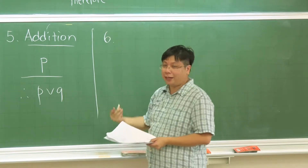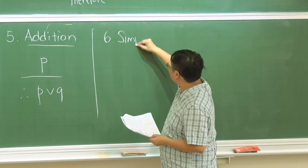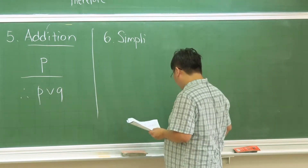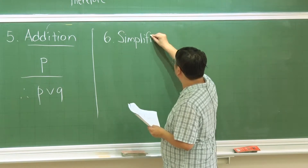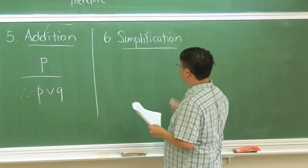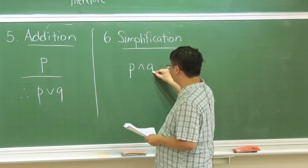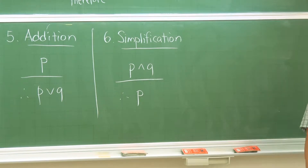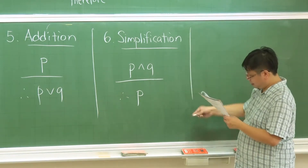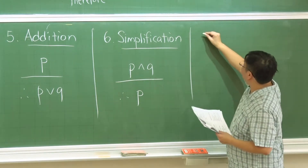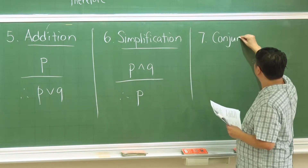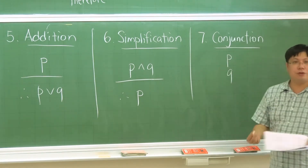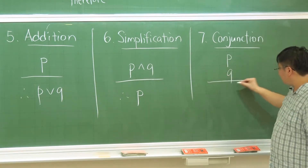The next rule is simplification, which is roughly the opposite of addition. If we know P and Q are both true, we can simply conclude that P has to be true. Then there is conjunction: if you know P is true and Q is true separately, then P and Q — the conjunction — has to be true.